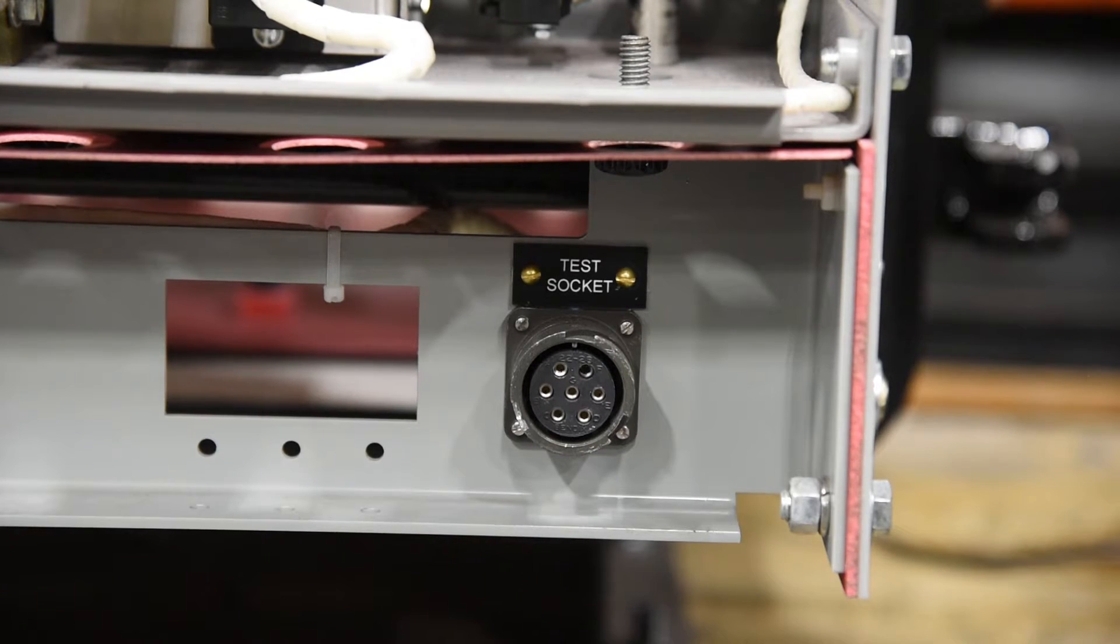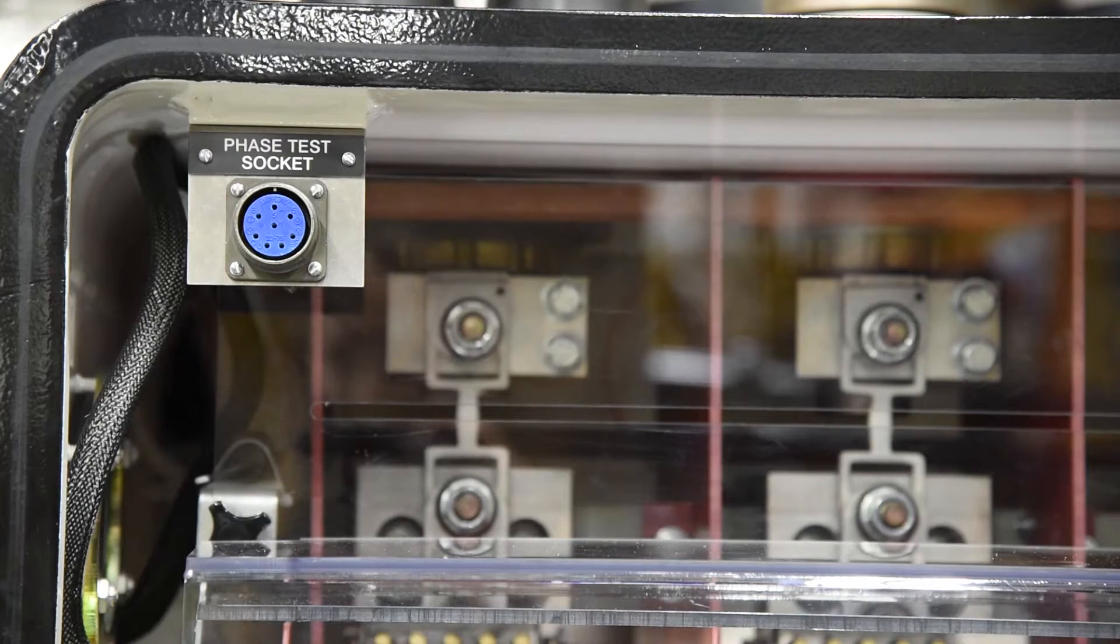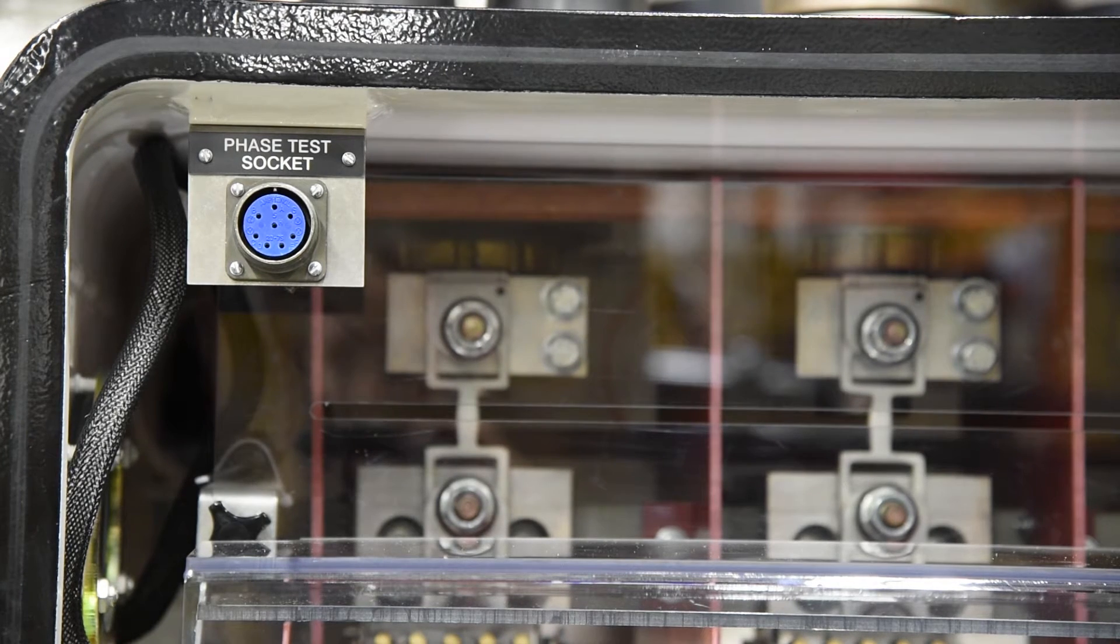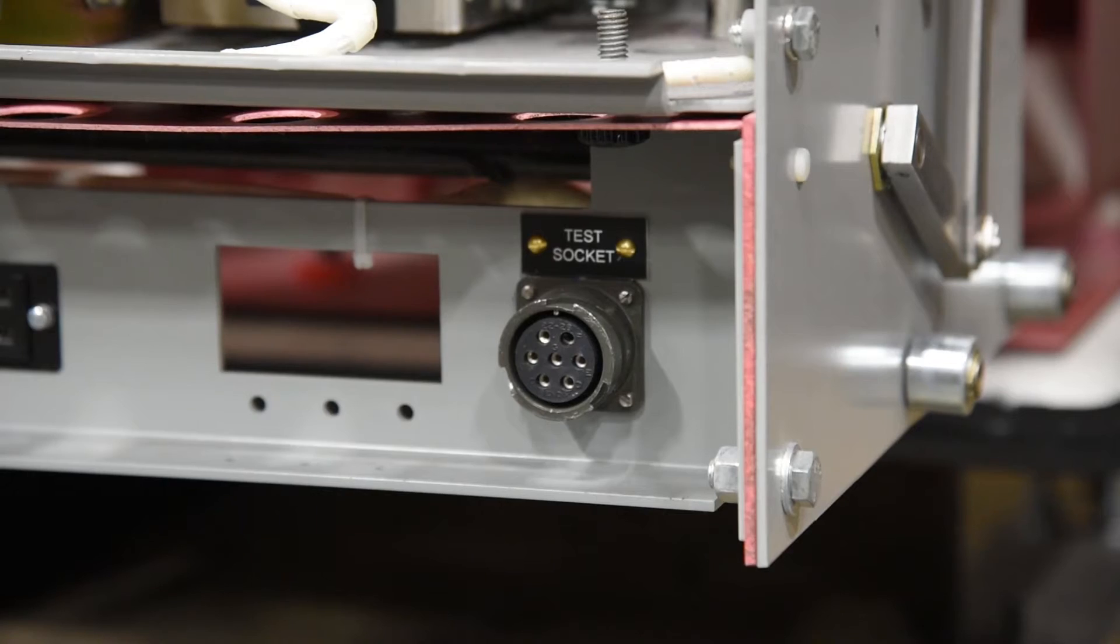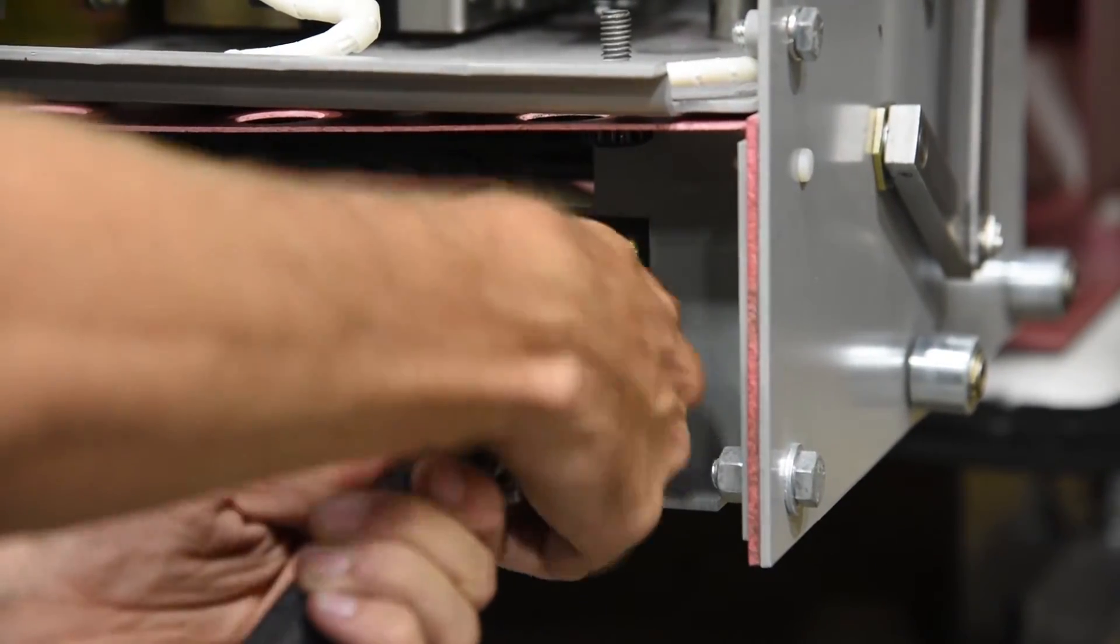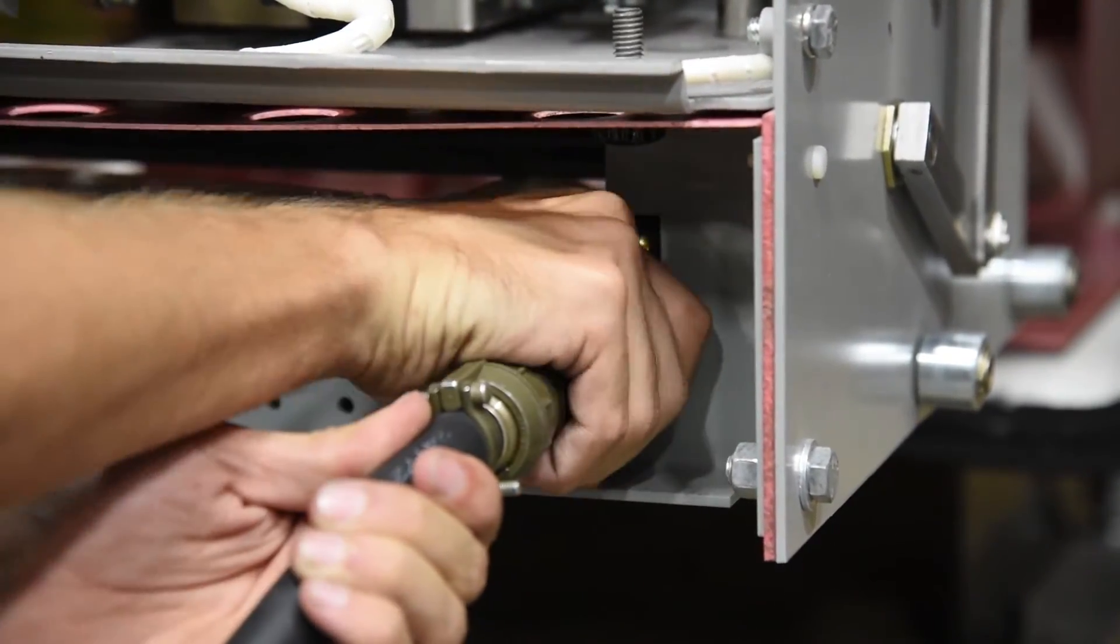Two connection sockets are available on the 416NP series to facilitate network protector commissions, testing, and preventative maintenance work. These Amphenol military grade connectors simplify connections and eliminate the need for alligator clips. A test socket comes standard on all 416NP mechanisms. It provides a convenient connection point for ETI network protector test set needs.